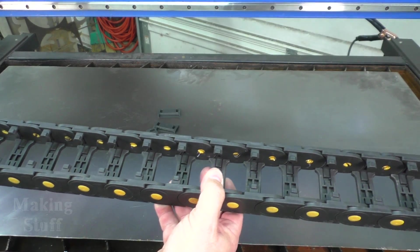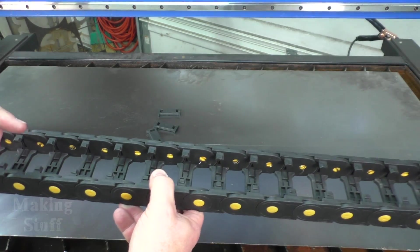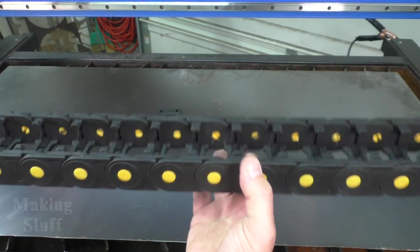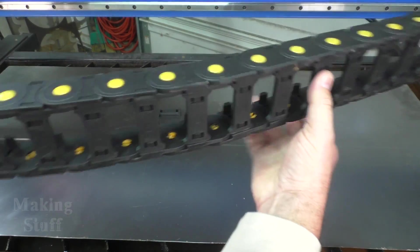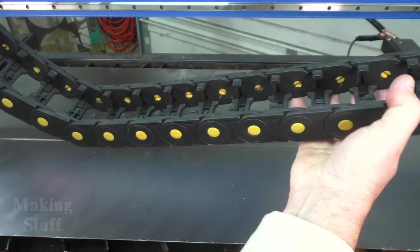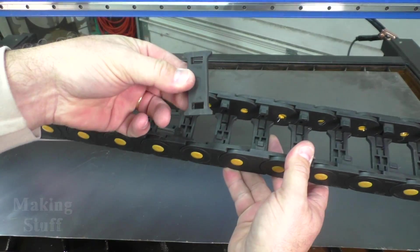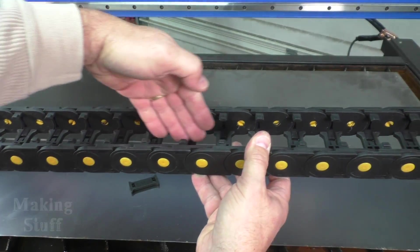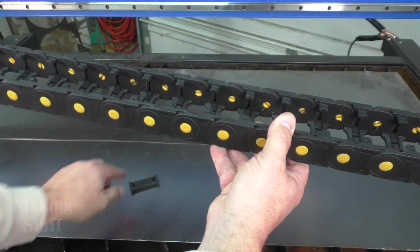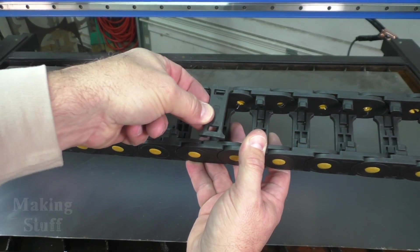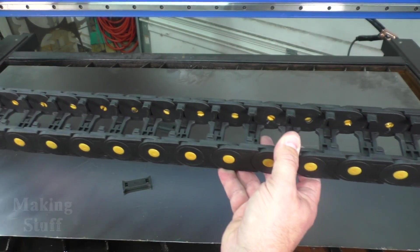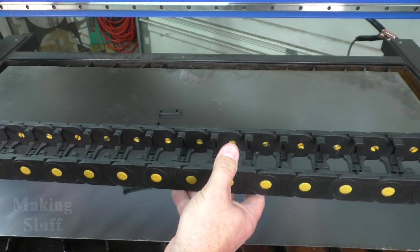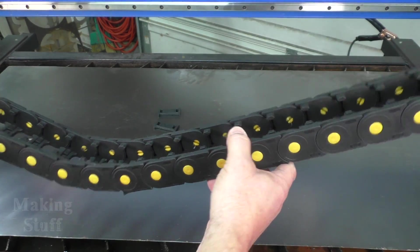This also has a feature that I like, and that is that these tabs are removable. So you can see here on the bottom I've got the tabs in place, but I've removed them from the top. This is going to come in really handy because now I can just lay that cable from that machine torch inside this cable chain and then snap all of these back into place. That's going to save me from having to take that torch apart and then feed that wire through this cable chain. So that's going to come in really handy and save me a lot of time.